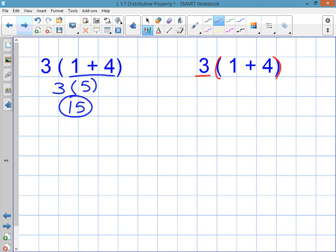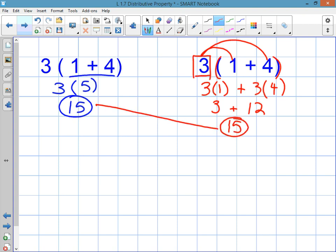The distributive property just means that you're going to distribute this 3 or give it to each part inside, so you're going to distribute it to the 1 and then to the 4. And when you distribute you're multiplying, so it's 3 times 1 plus 3 times 4. 3 times 1 is 3 plus 3 times 4 is 12. 3 plus 12 is 15. Same answer.